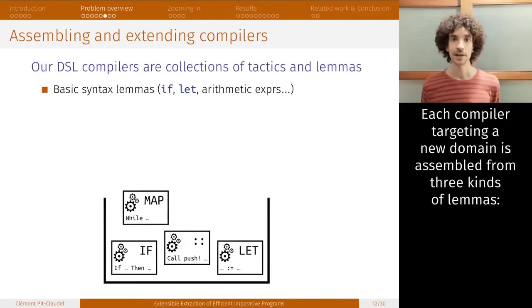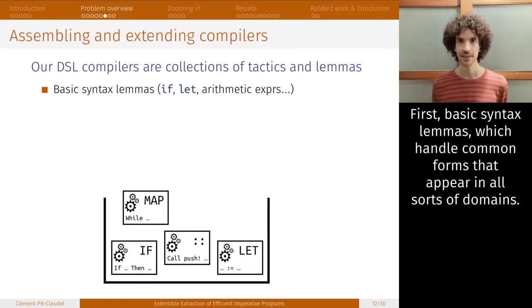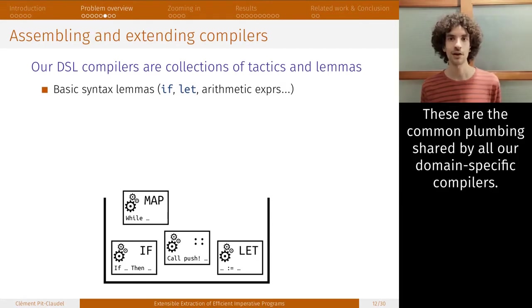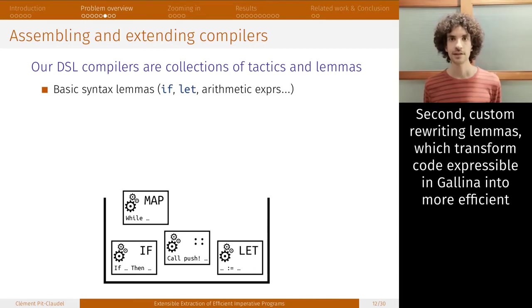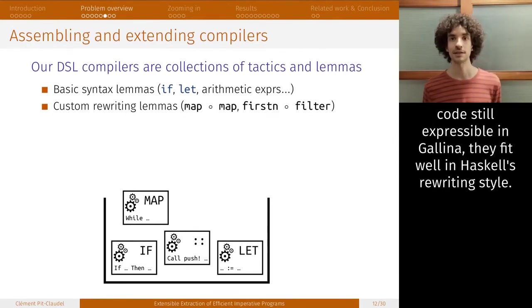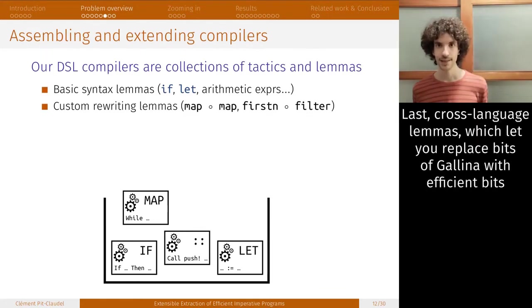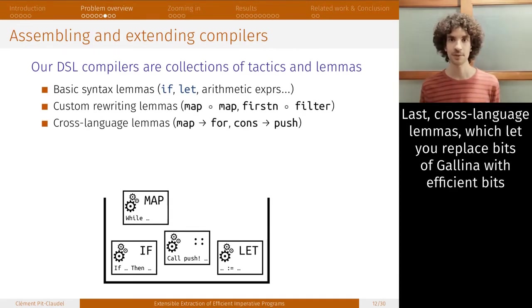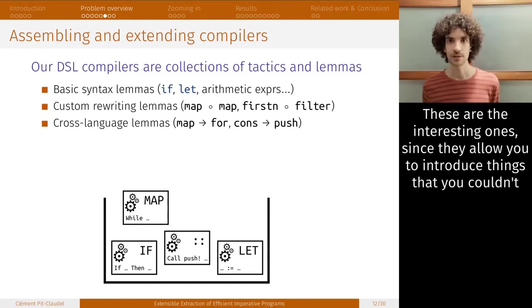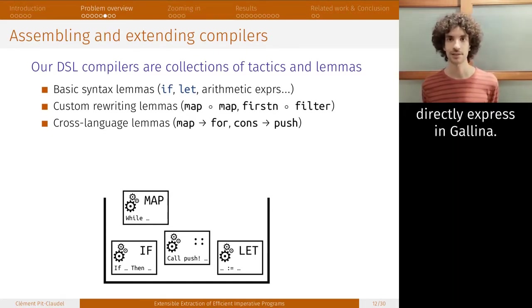Each compiler targeting a new domain is assembled from three kinds of lemmas. First, there are basic syntax lemmas, which handle common forms that appear in all sorts of domains. These are the common plumbing shared by all our domain-specific compilers, arithmetic, ifs, and so on. Second, custom rewriting lemmas, which transform code expressible in Galena. These fit well in Haskell's rewriting style. Last, there are cross-language lemmas, which let you replace bits of Galena with efficient bits of facade code, our target language. These are the interesting ones, because they allow you to introduce things that you couldn't directly express in Galena.